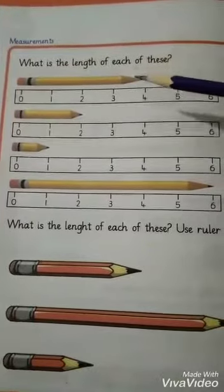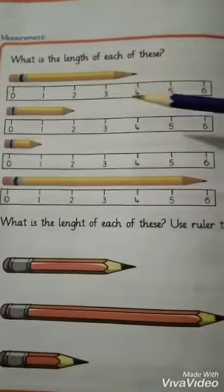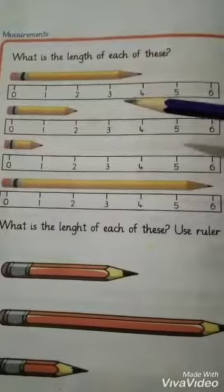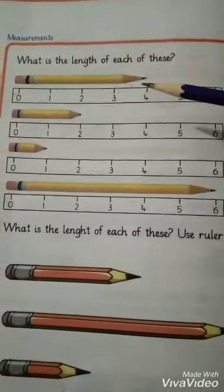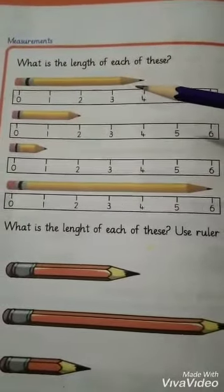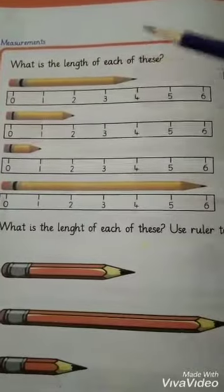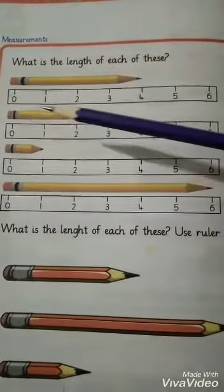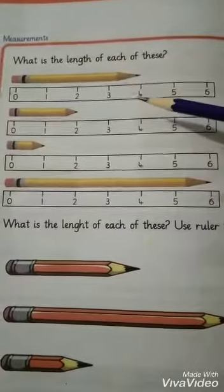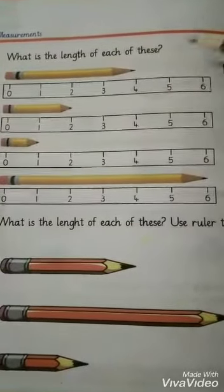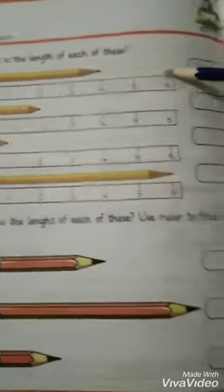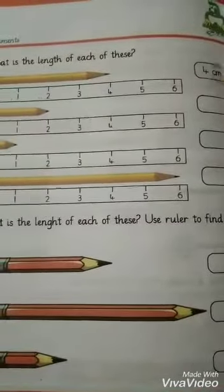Look at that pencil and look at that measuring scale. We have the scale showing the pencil's length. This pencil is how many centimeters? Look: zero, one, two, three, four. This pencil is four centimeters.